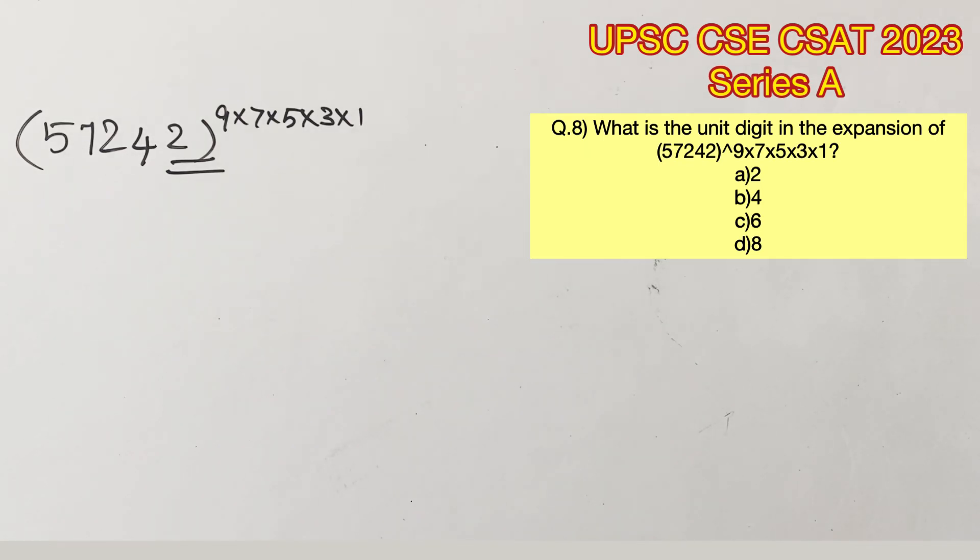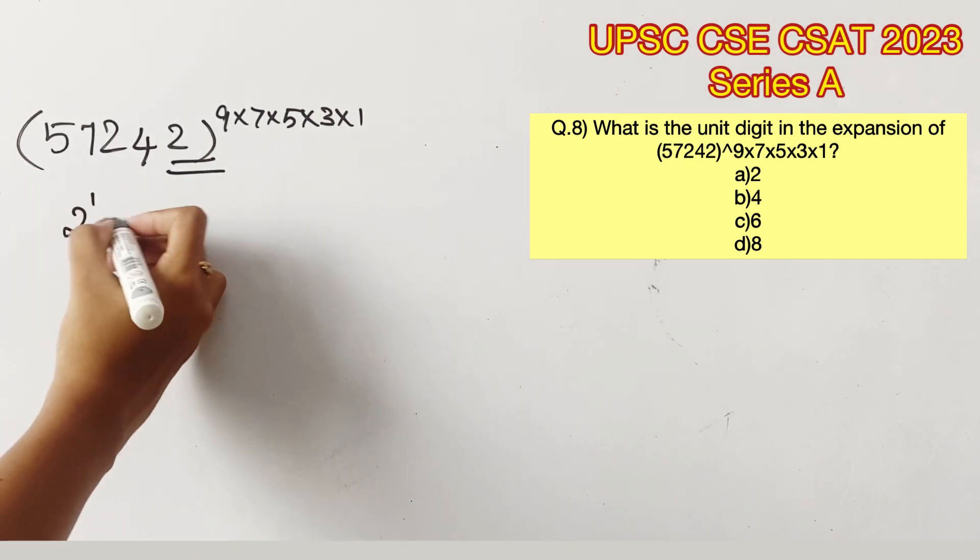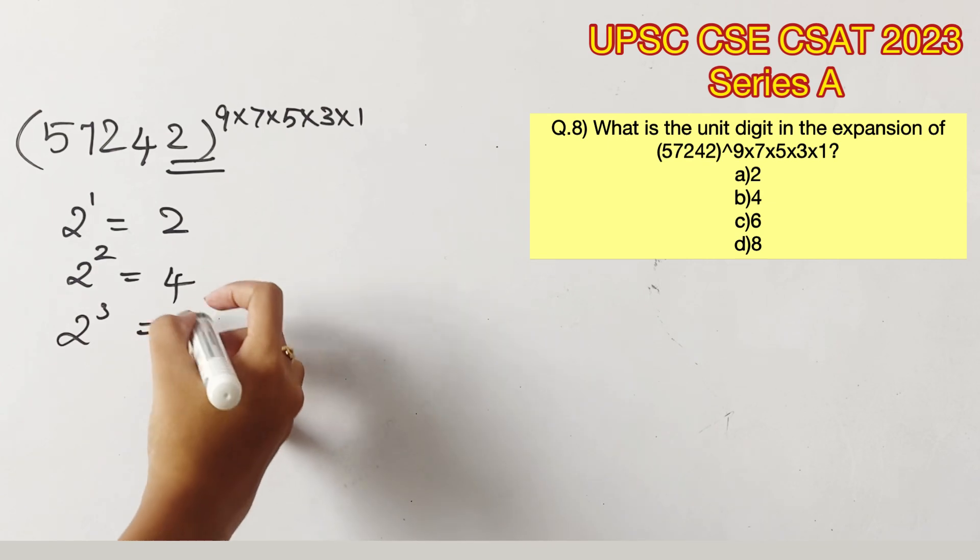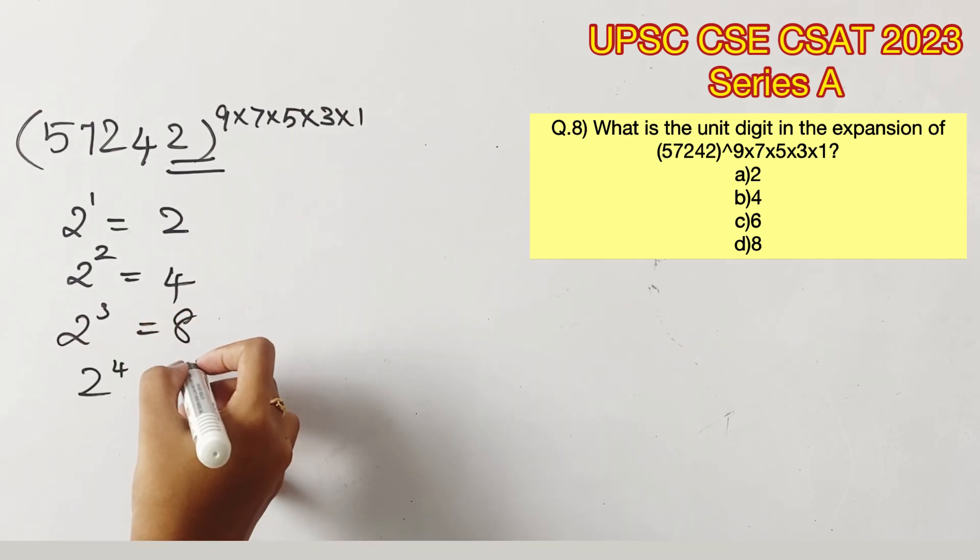Now before solving, let's understand the pattern that 2 follows when it's continuously raised to powers. We'll start with the basic 2^1 that gives us 2, 2^2 that gives us 4, 2^3 gives us 8, 2^4 gives us 16.